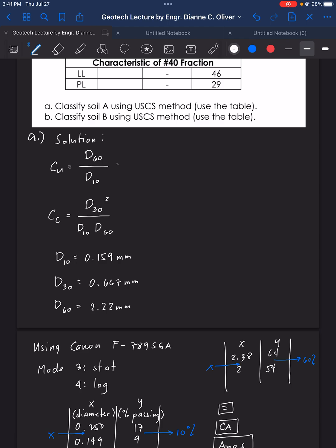We will now solve for CU. CU now is 2.22 divided by D10, 0.159. The value here is 13.96. How about CC? For CC, we have 0.667 squared over D10, 0.159 times 2.22. And that is equal to 1.26.